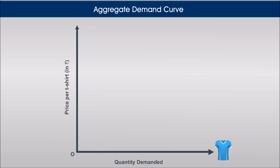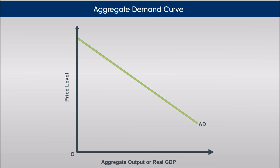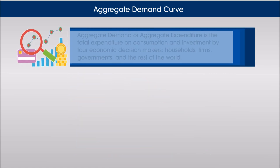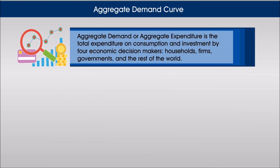Now let's talk about the demand for our composite measure of output — that is, aggregate output or real GDP. The aggregate demand curve shows the relationship between the price level in the economy and the aggregate output demanded, other things constant. The downward sloping AD curve reflects an inverse relationship between the price level and aggregate output demanded.